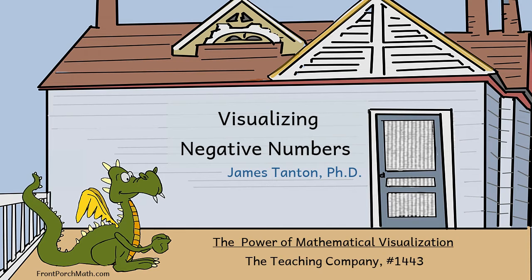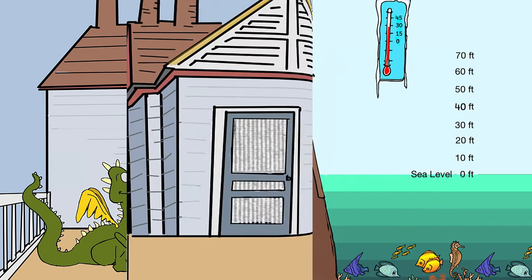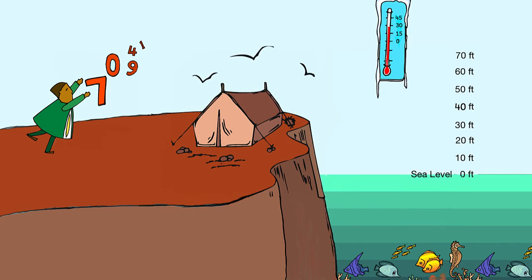Visualizing Negative Numbers by Professor James Tanton. The positive counting numbers constitute only half of the integer world.